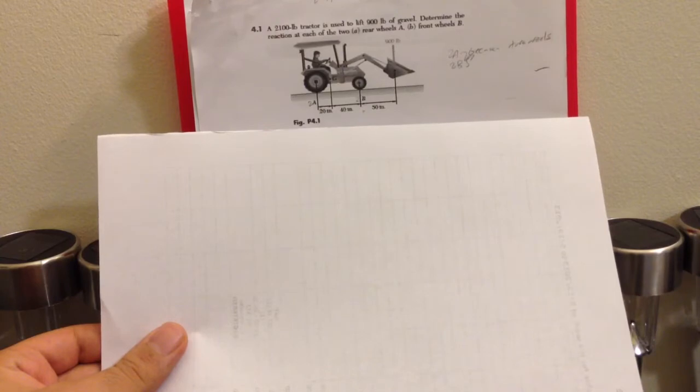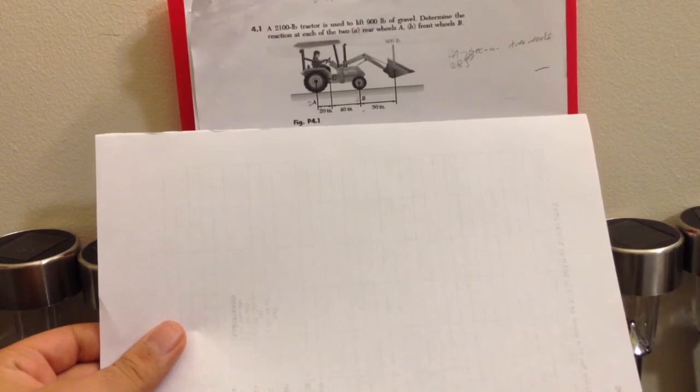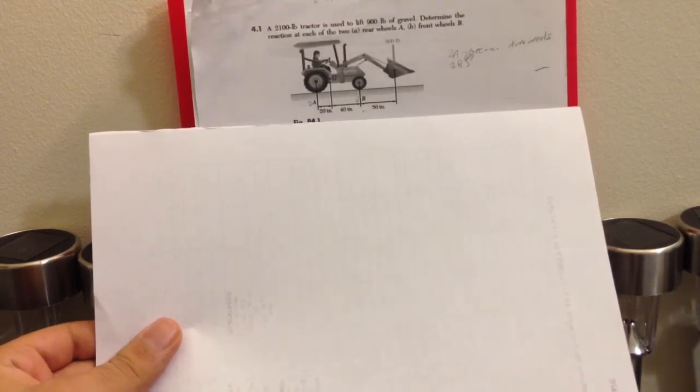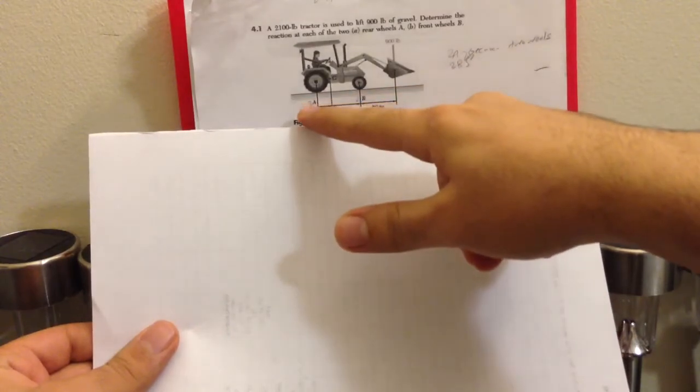Determine the reaction at each of the two rear wheels at point A and the front wheel which is B. As we can see here, here are points A and B.